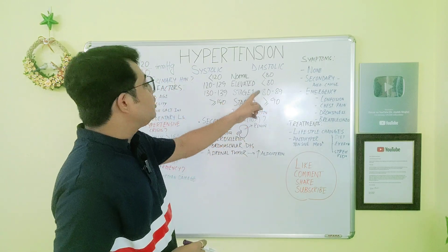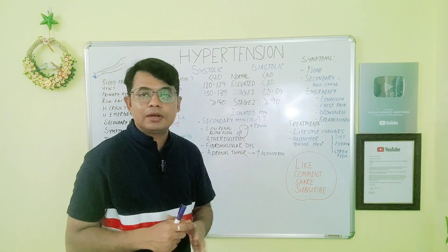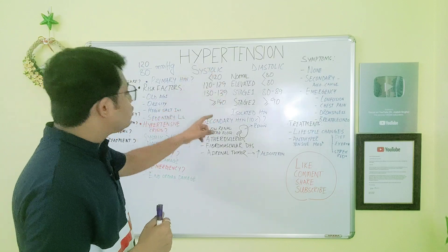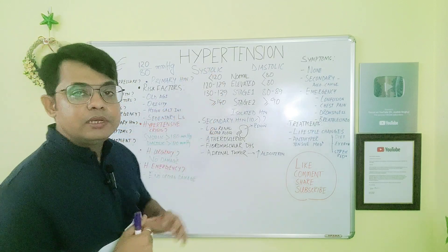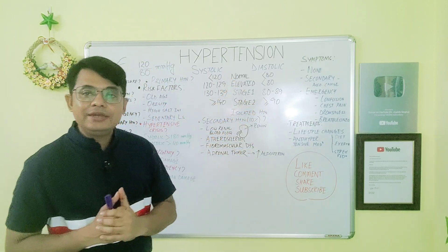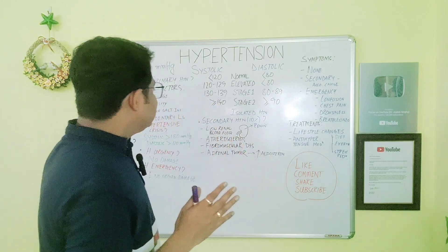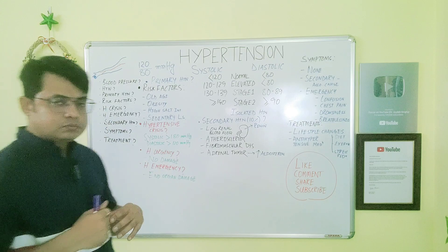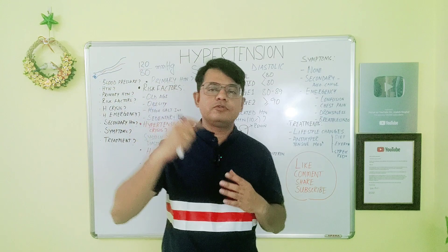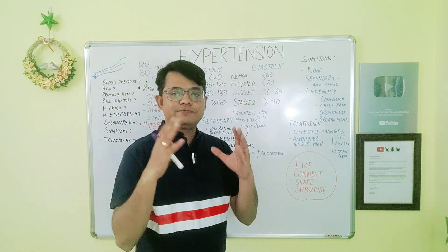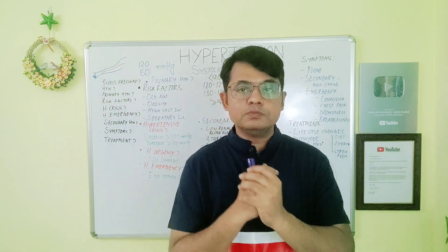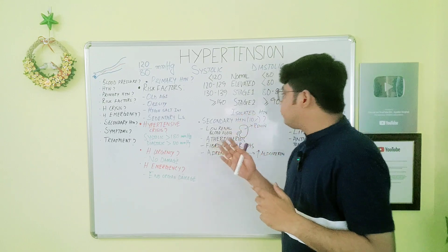Stage 1 hypertension also includes diastolic blood pressure of 80 to 89 millimeter of mercury. Stage 2 hypertension is when the systolic blood pressure is greater than or equal to 140 millimeter of mercury and the diastolic blood pressure is greater than or equal to 90 millimeter of mercury. It is commonly seen that when systolic blood pressure is above normal, diastolic is also elevated, but this is not always the rule — there may be isolated systolic hypertension or isolated diastolic hypertension.